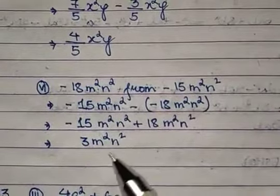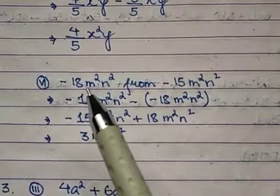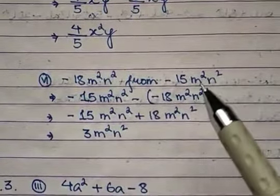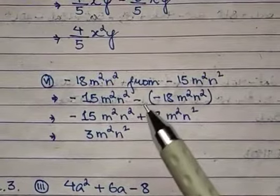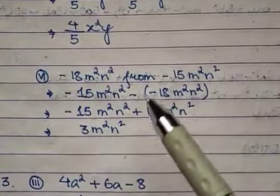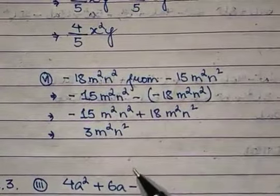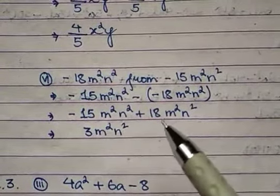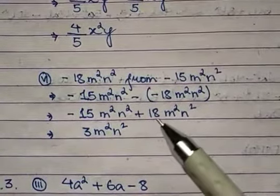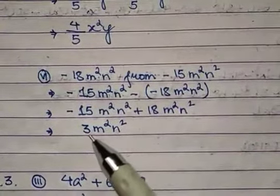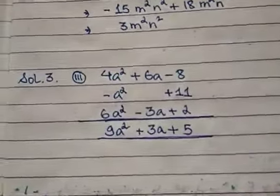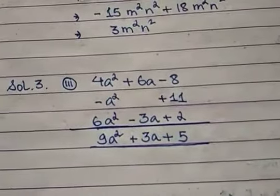Question 6: subtract −18m²n² from −15m²n². The first term is placed first, so: −15m²n² − (−18m²n²). Opening the bracket, minus × minus = plus, giving two like terms with opposite signs. 18 is the greater number with a plus sign, so 18 − 15 = 3, giving +3m²n².